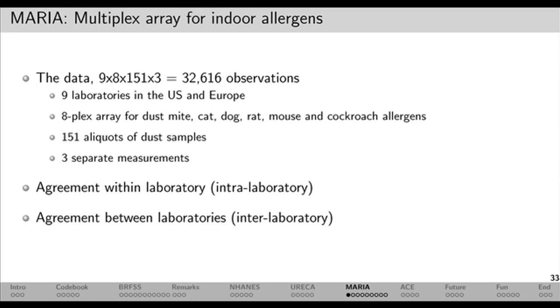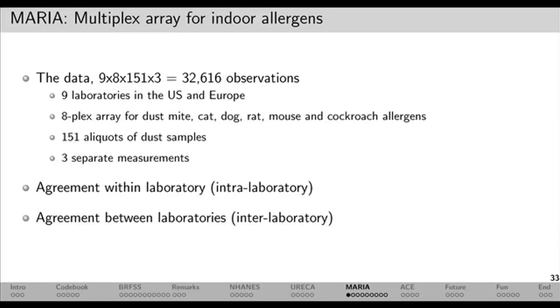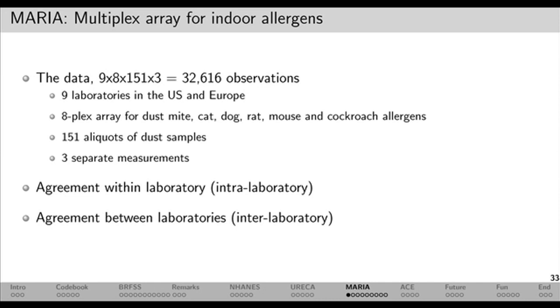Now I'm going to move to the Maria example — I think some of you have seen this at the old company meeting. I'll go into more detail about how we built the figures from beginning to end, most of which went to the manuscript. This was work done by Hermann and Sam Arbs. We received a dataset of 32,616 observations. They wanted to know if they had a good method to measure agreement within a laboratory and between laboratories — nine laboratories in the US and Europe, using a MULTIPLEX array with 151 aliquots measured three separate times.